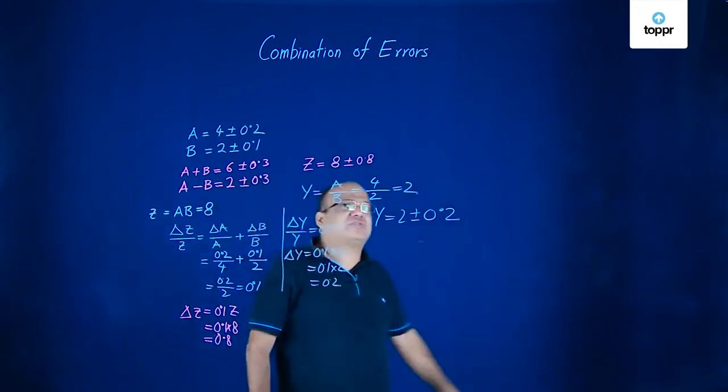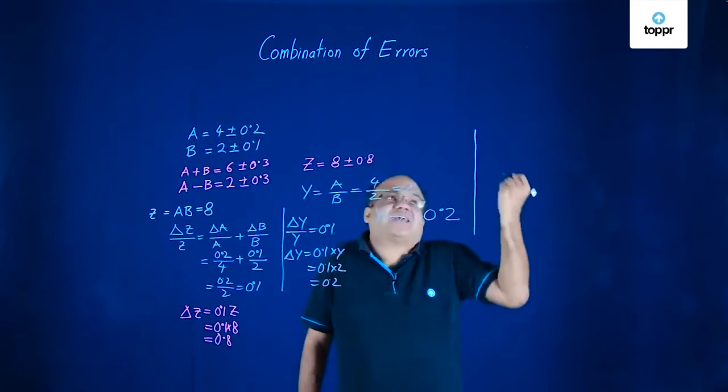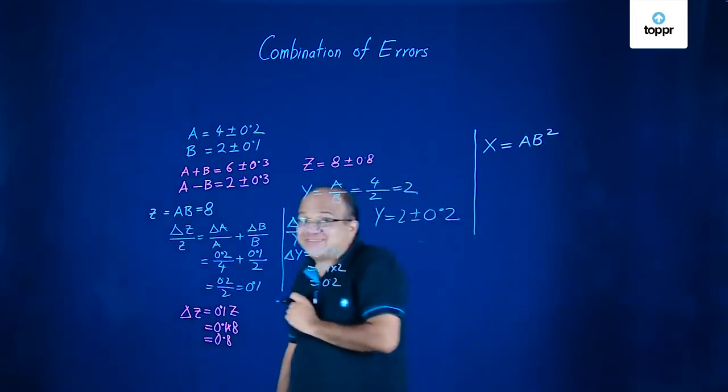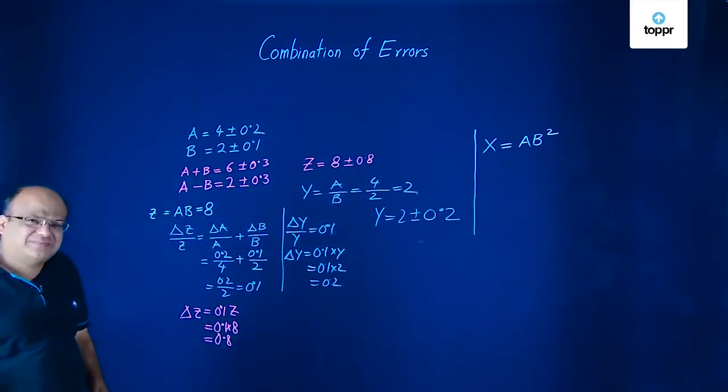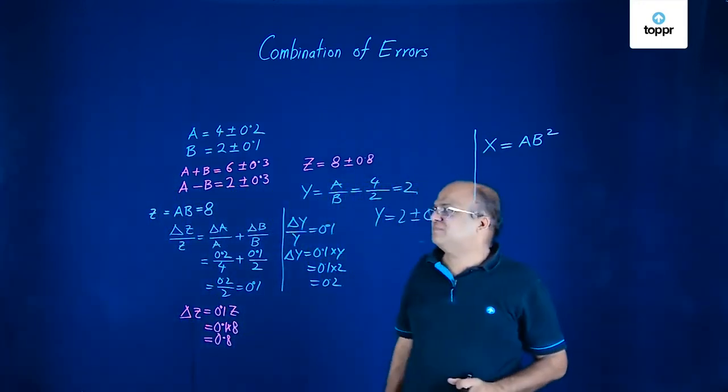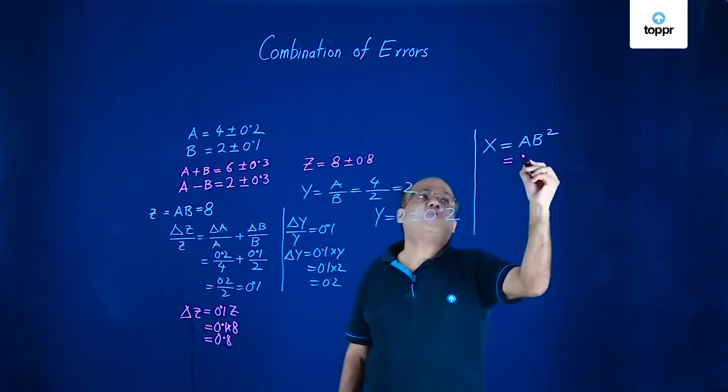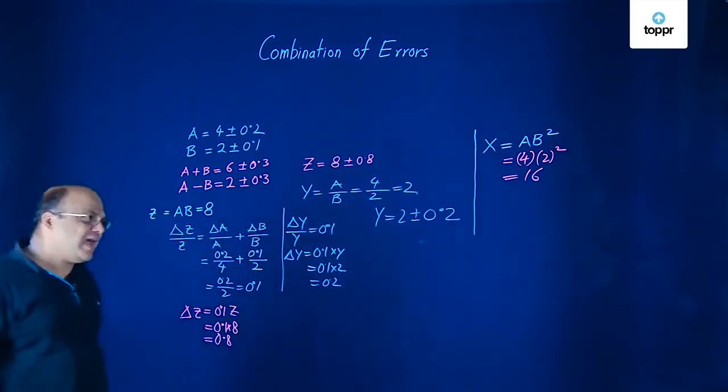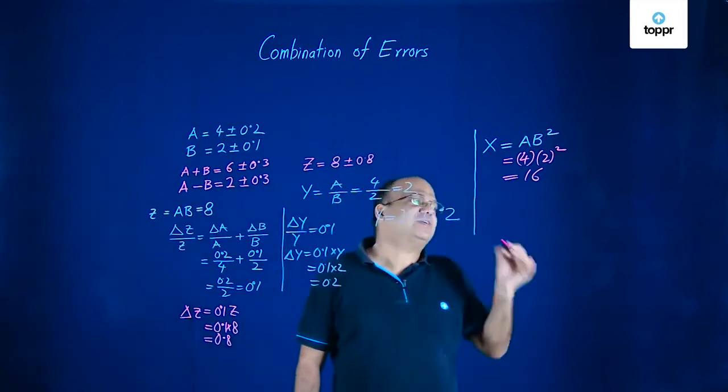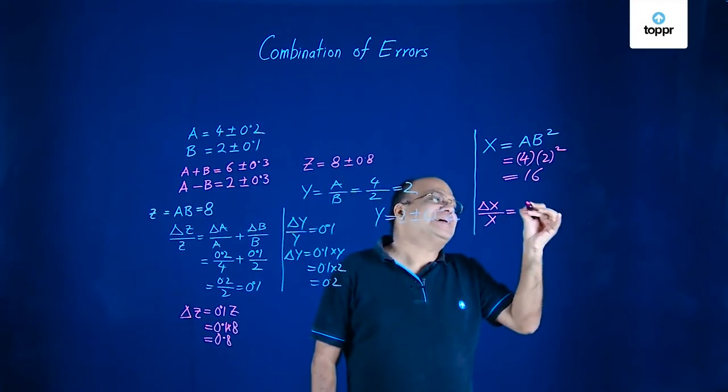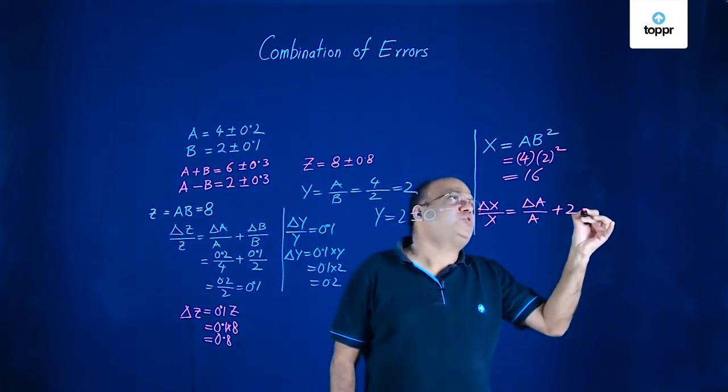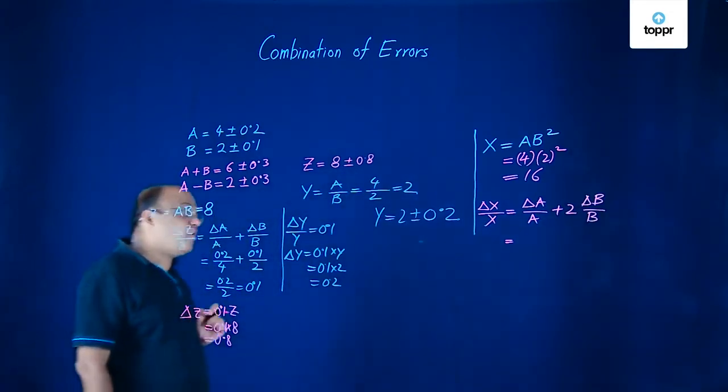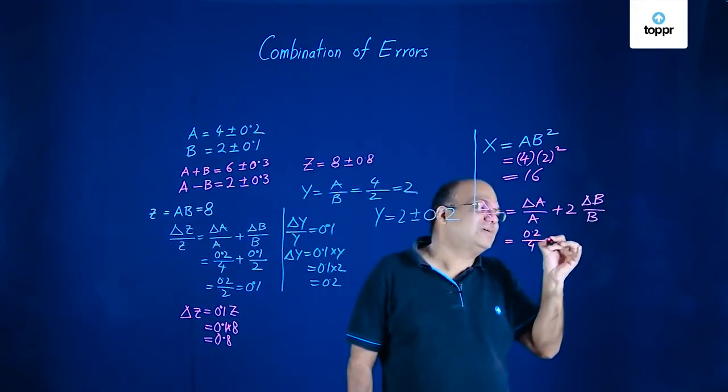Now suppose, we have to calculate now, let us call it X. X is equal to AB square. Now how to do this? X is now AB square. Don't get scared. That power will just become the coefficient.